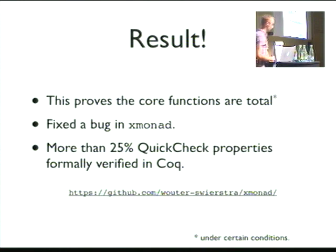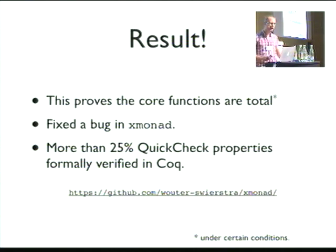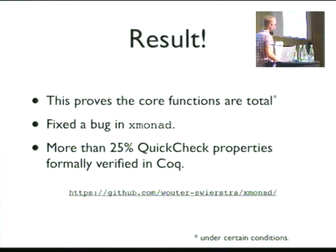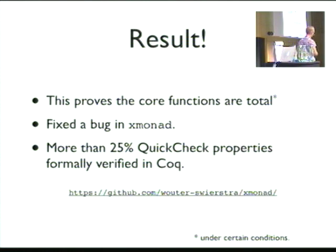We fixed a bug in XMonad — that was good. And more than a quarter of the QuickCheck properties that XMonad defines I've actually verified in Coq. I kind of lost interest at that point, I have to say — just doing proofs in Coq is something we know how to do. This was more an experiment seeing how we could use verified Haskell code in a real project. It's all on GitHub, so you can check it out and have a look.